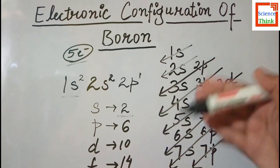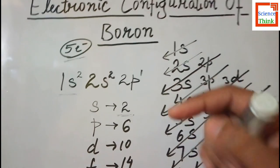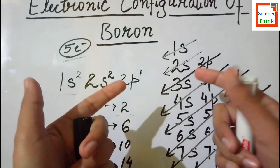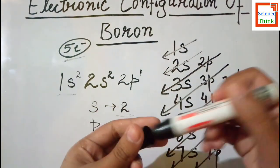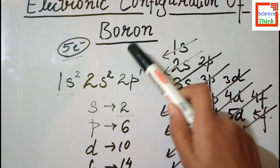So boron has total number of 5 electrons which are present in the 1s, 2s, and 2p orbitals. So by this chart we get to know how the electrons are filled in the increasing order of the orbitals of different energies. So this will be the electronic configuration of boron.